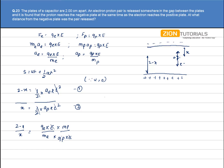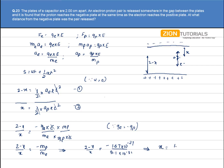The electric field cancels. Since Q_E equals negative Q_P, the charges cancel with a negative sign. So we have: (2-x)/x = −m_P / m_e. Substituting values, the mass of proton is 1.67 × 10⁻²⁷ kg and mass of electron is 9.1 × 10⁻³¹ kg. On solving this equation for x, we get x = 1.08 × 10⁻⁸ cm.